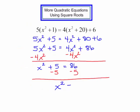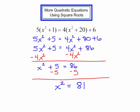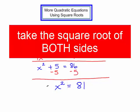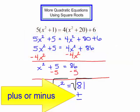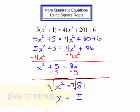x squared equals 81. The squared term is isolated. I can now take the square root of each side. The square root of x squared is x. And remember, when you take the square root of both sides, your answer is plus or minus. The square root of 81 is 9, so x equals plus or minus 9.